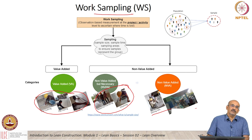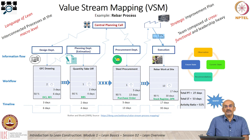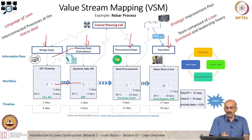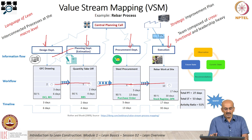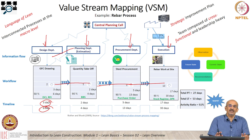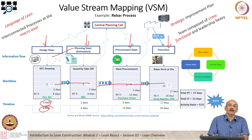Moving to value stream mapping — you can see an example of a value stream map here. This is a value stream map of a rebar process, where you have design, planning or estimation, procurement, and then execution, and how information flows between these sections and how actual work flows from drawing to quantity takeoff to procurement to rebar work at site. Once you map processes like this, you can record the actual time required for each step versus the total lead time versus value added time, and then look at the efficiency of the process, make changes, eliminate waste, and make the process more efficient.